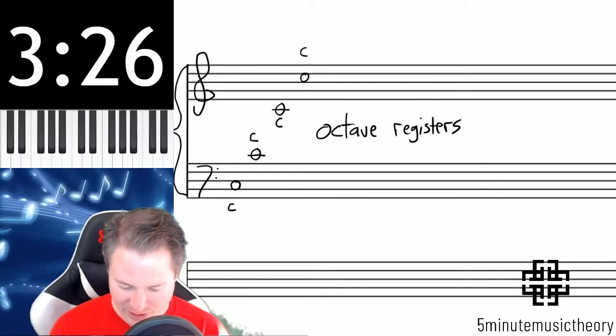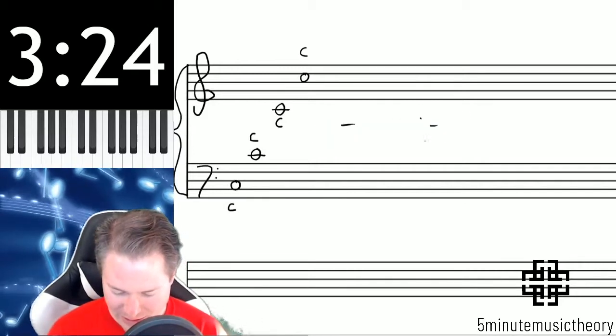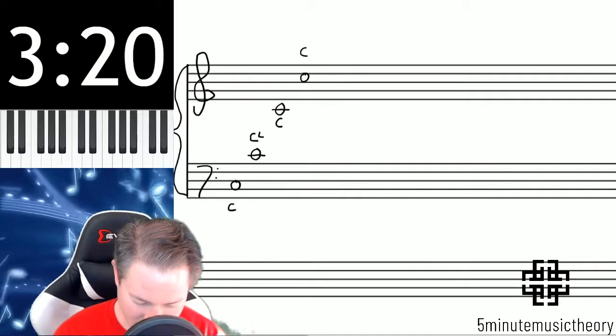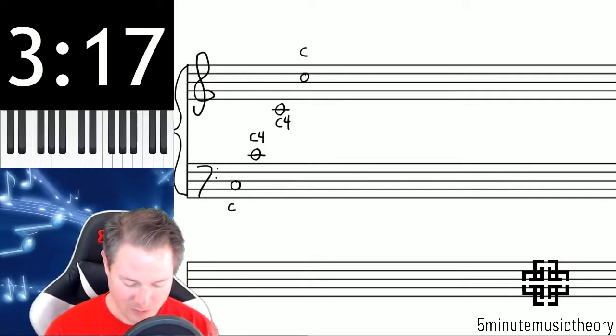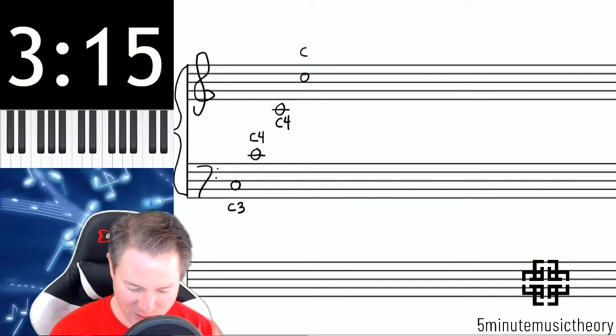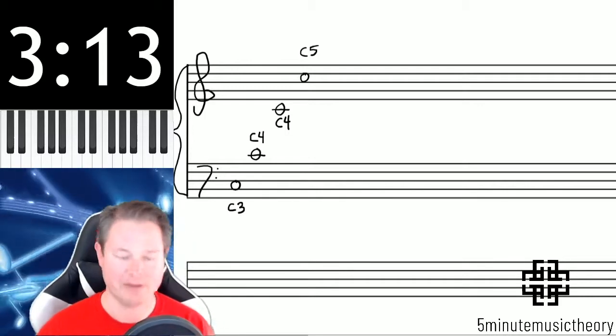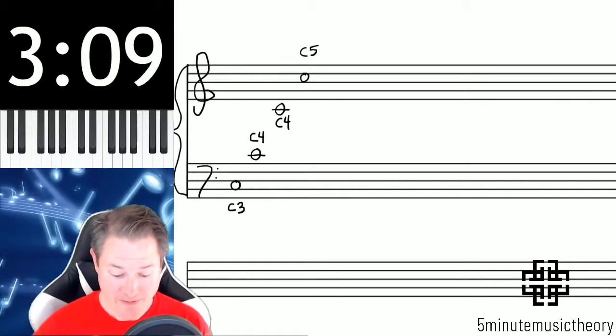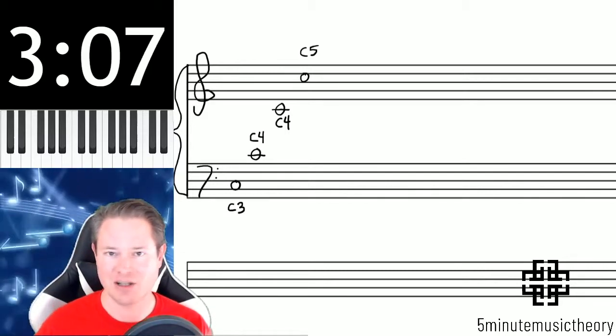Now octave registers, let me erase that term there and let's go ahead and cover what these are. First, I'm going to show you what the octave register designations would be of these. We have a C3, two C4s, and a C5. The numbers have to do with the pitch level, with the register. The C just always means that it's the pitch C.